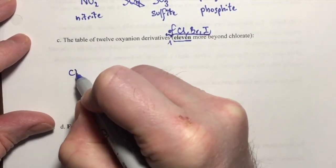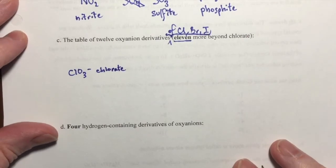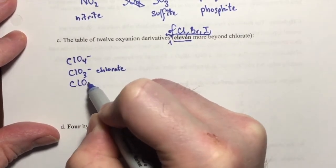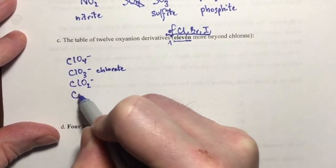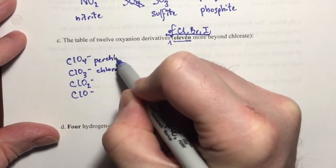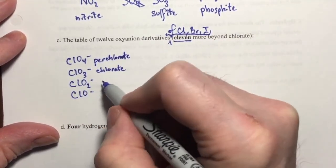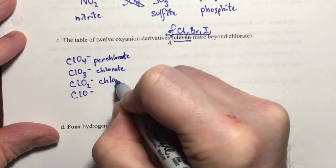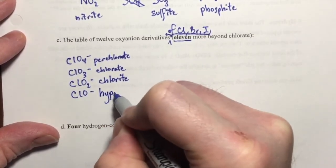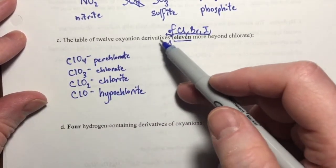So if we start with ClO3, that's chlorate. That's the one we already know. Then we go one additional oxygen, and one less oxygen, and two less oxygens. And of course, this is perchlorate, chlorate, chlorite, and hypochlorite. So these are the oxyanion derivatives of chlorine.